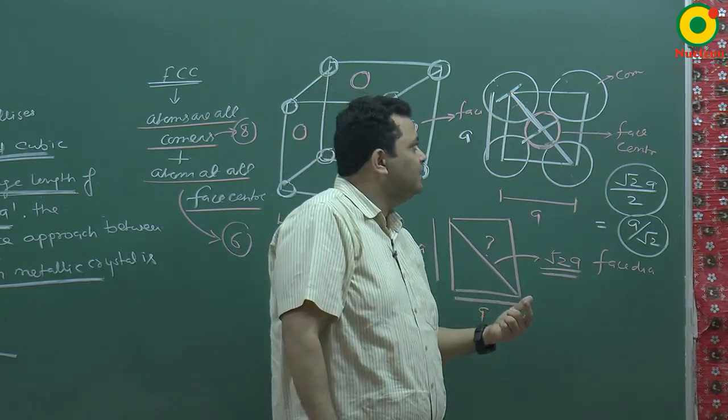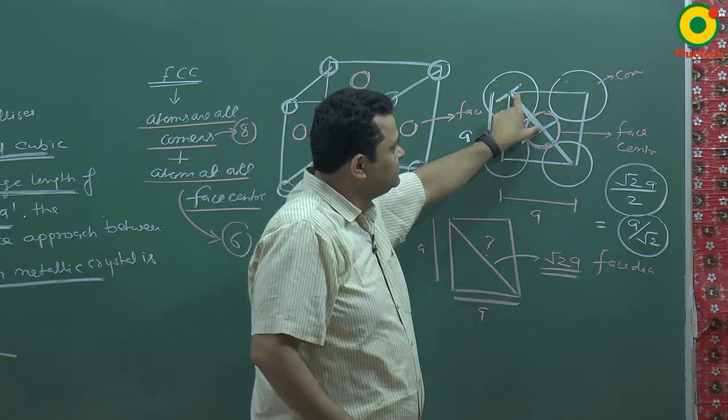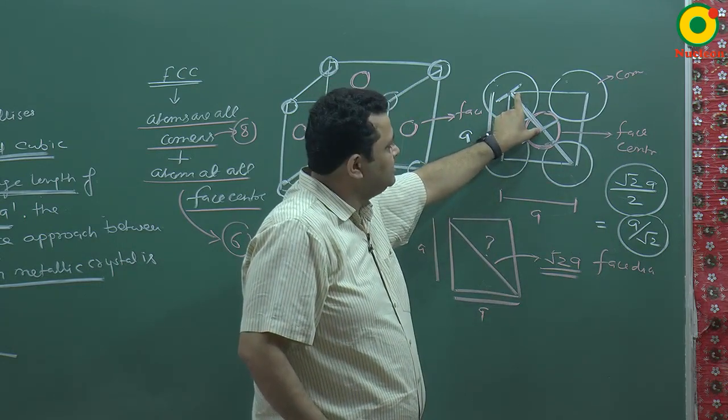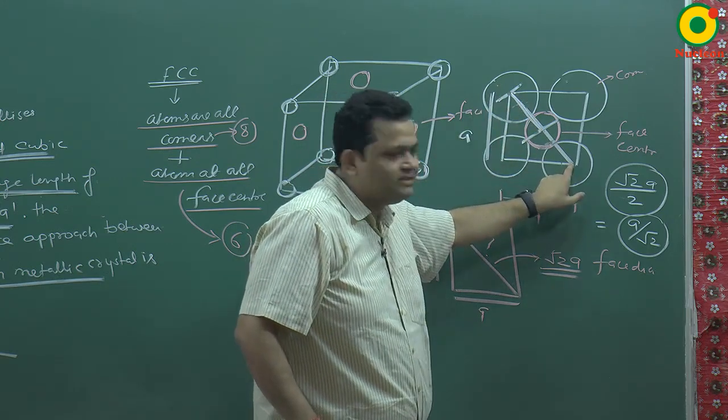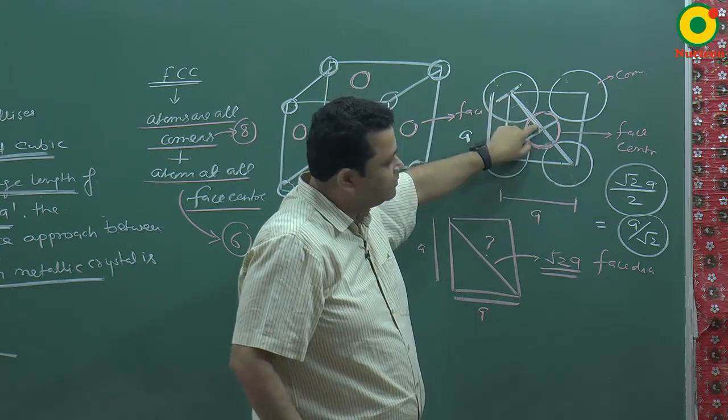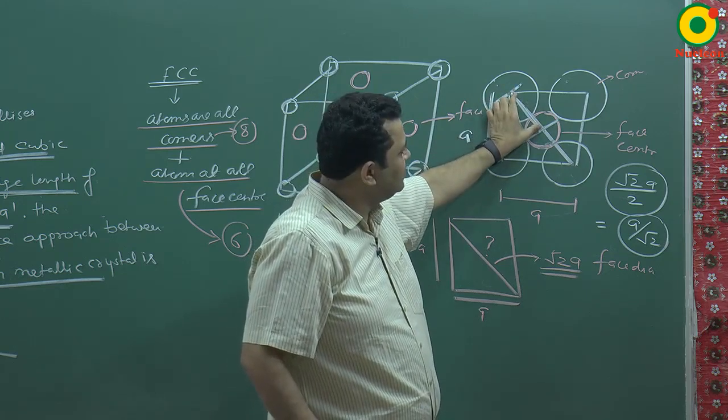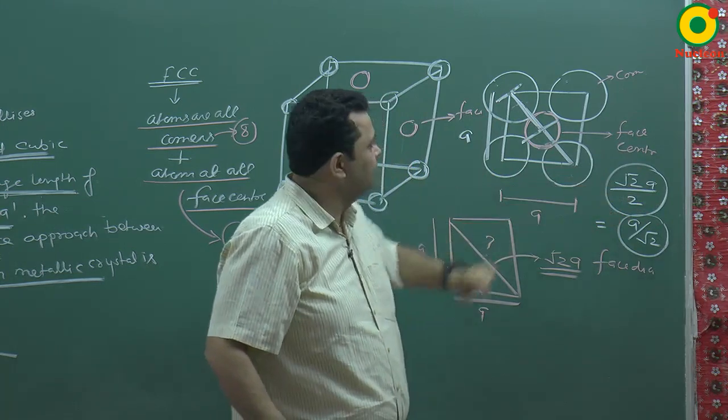So in FCC, what is the minimum distance between two atoms? The two atoms touch at this distance. If the edge length is a, the whole distance is root 2a and the closest distance is half the face diagonal, means root 2a divided by 2. So the answer is a by root 2.